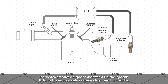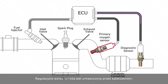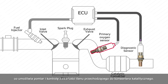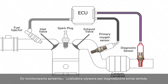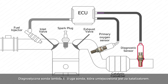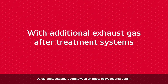The primary oxygen sensor is located upstream of the catalytic converter, which allows the oxygen content passing into the converter to be measured and controlled. To monitor the efficiency of the catalytic converter, a second or diagnostic oxygen sensor is used, located downstream of the catalytic converter.